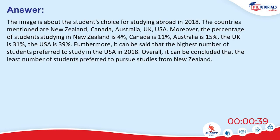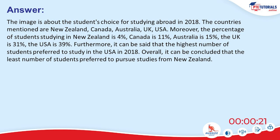The image is about students' choice for studying abroad in 2018. The countries mentioned are New Zealand, Canada, Australia, UK, and USA. The percentage of students studying in New Zealand is 4%, Canada is 11%, Australia is 15%, UK is 31%, and USA is 39%. The highest number of students preferred to study in the USA, and the least preferred New Zealand.